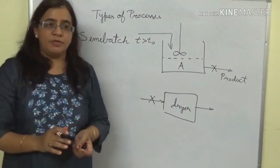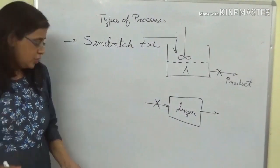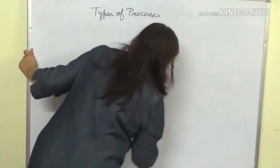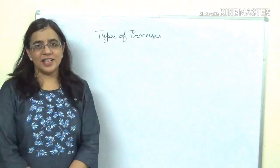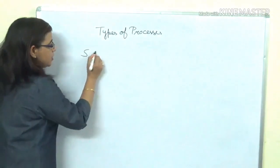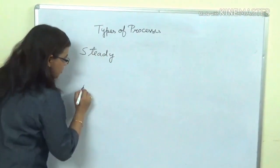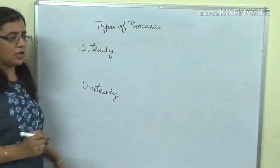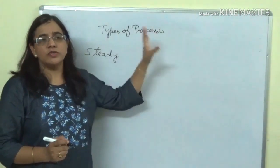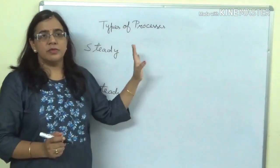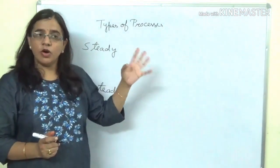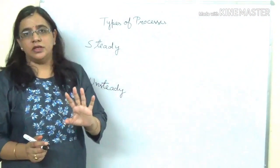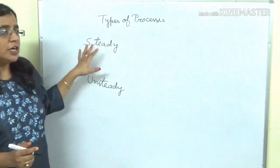These are the three different types of processes used in chemical engineering: batch, semi-batch, and continuous. Processes can also be classified as steady state or unsteady state processes. In a steady state process, the flow streams, compositions, temperature, pressure, and all process variables within the process units do not change with time.